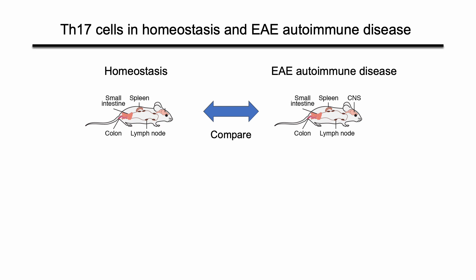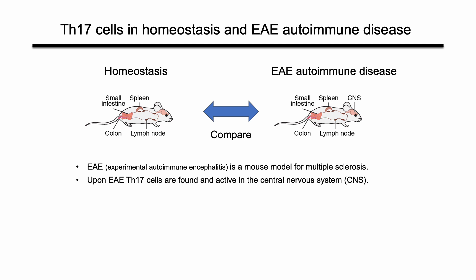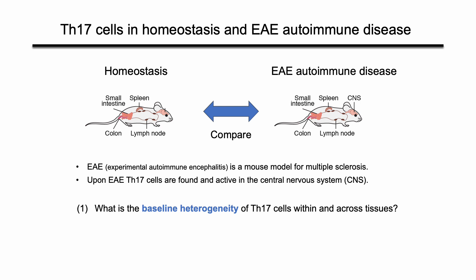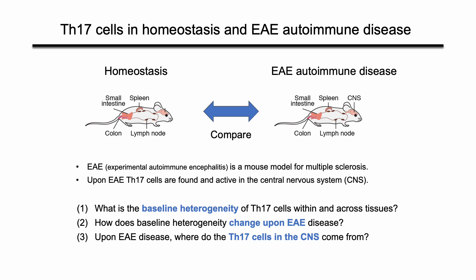Now I'm going to show you how we explored these two questions for Th17 cells at homeostasis and during EAE autoimmune disease. EAE is a mouse model for multiple sclerosis. Upon EAE, Th17 cells can be found in the central nervous system in addition to the gut-related tissues. Our questions were: firstly, what is the baseline heterogeneity of Th17 cells within and across tissues? Secondly, how does the baseline heterogeneity change upon EAE disease? And number three, upon EAE disease, where do the Th17 cells in the CNS come from?